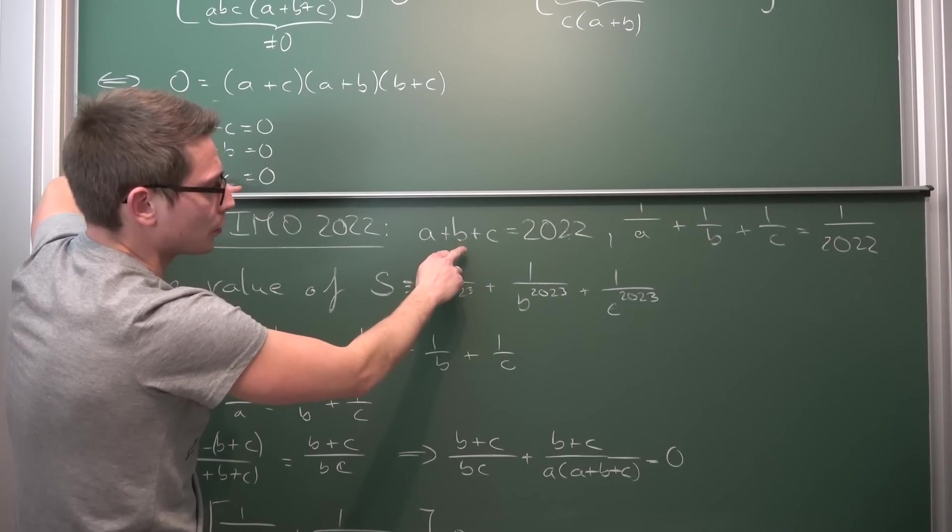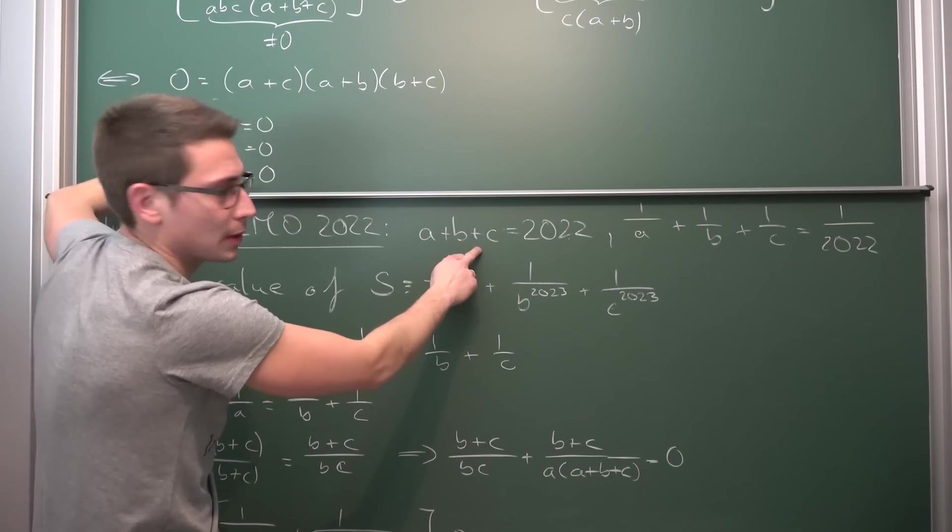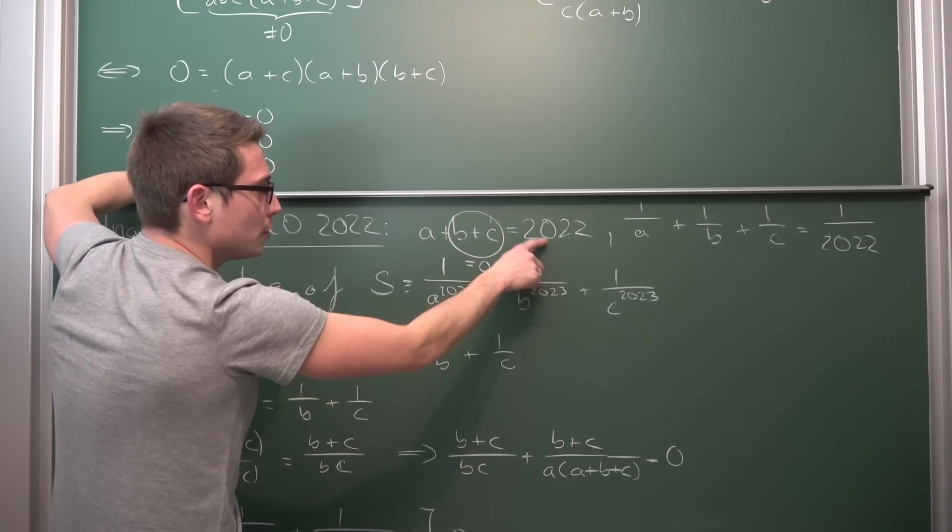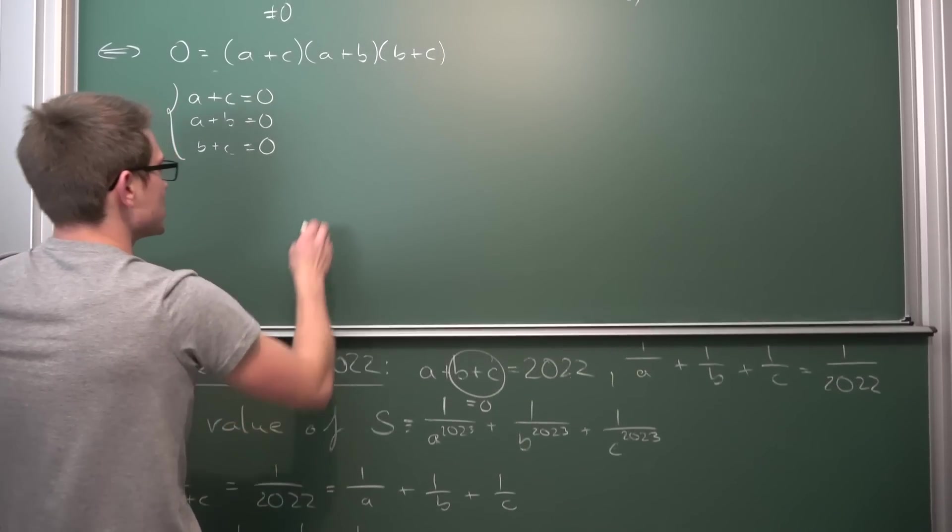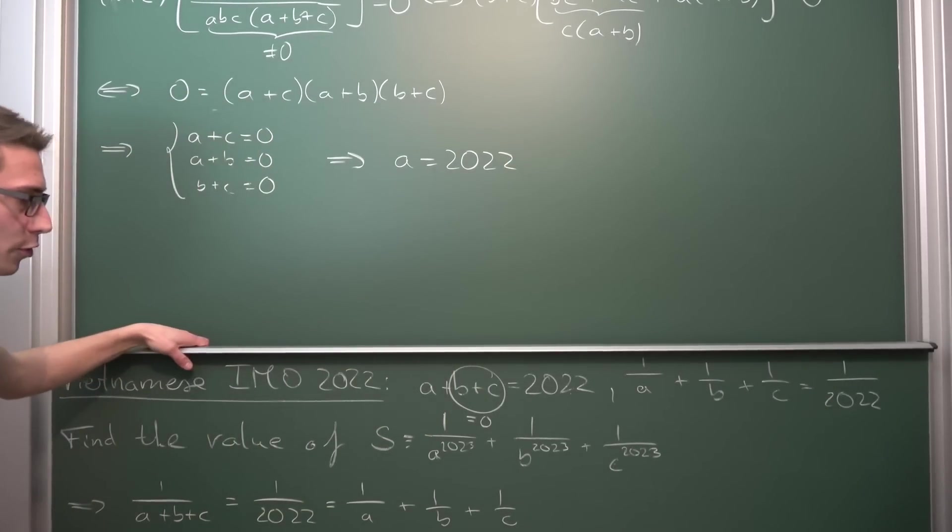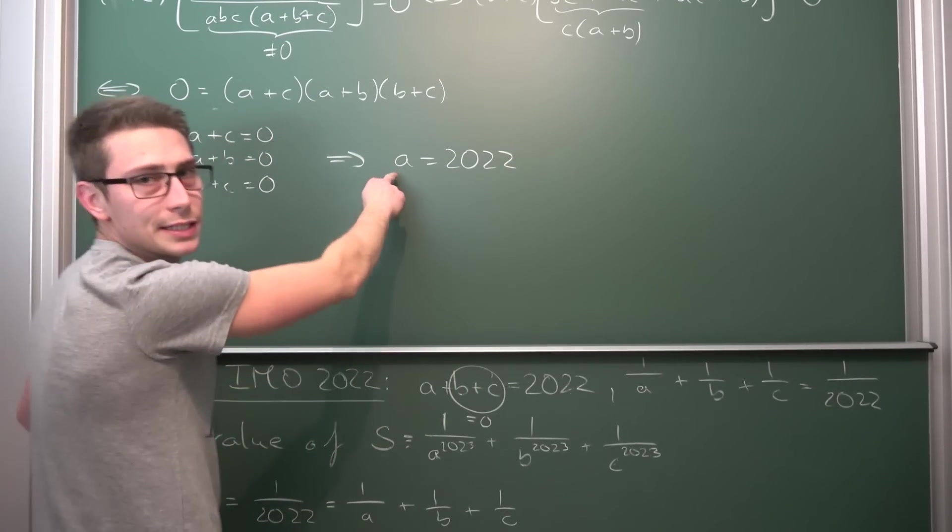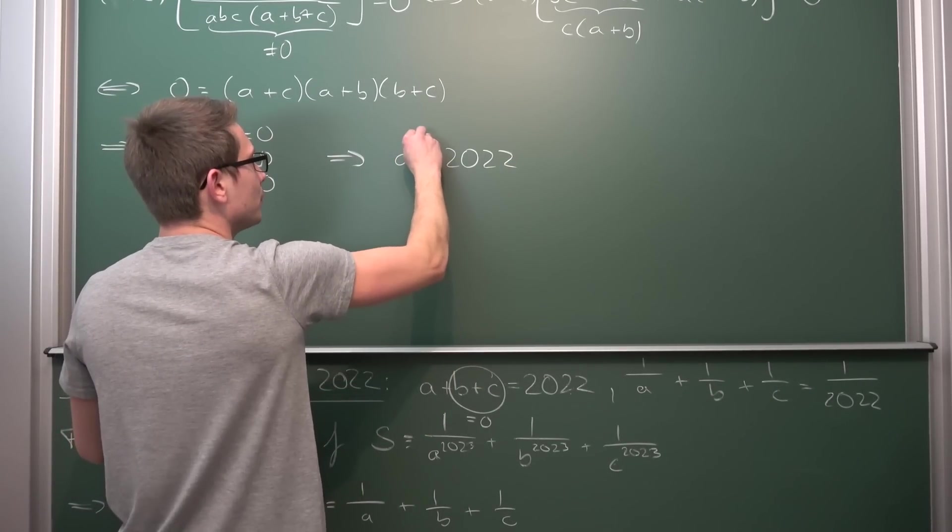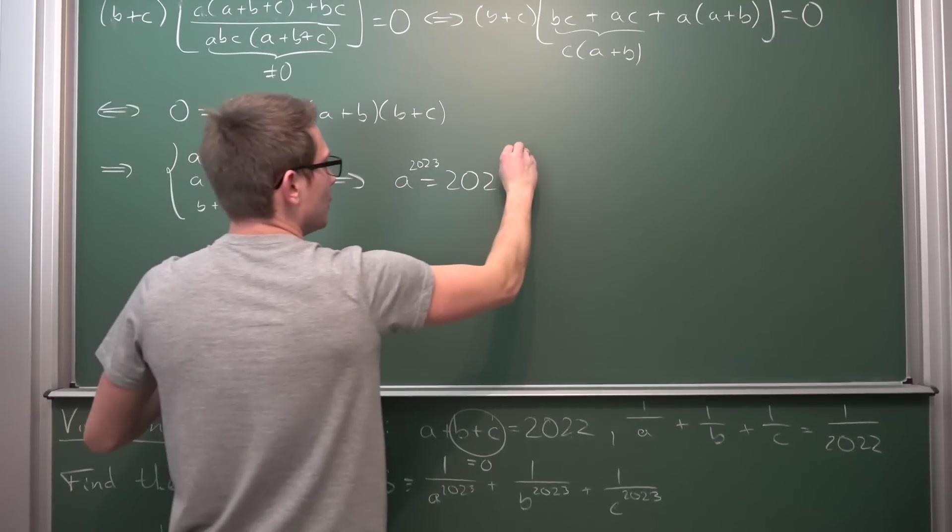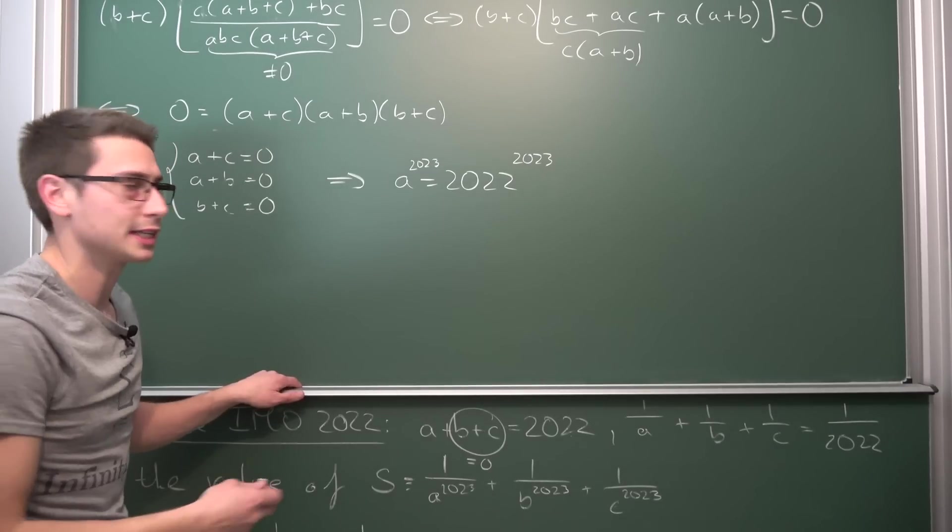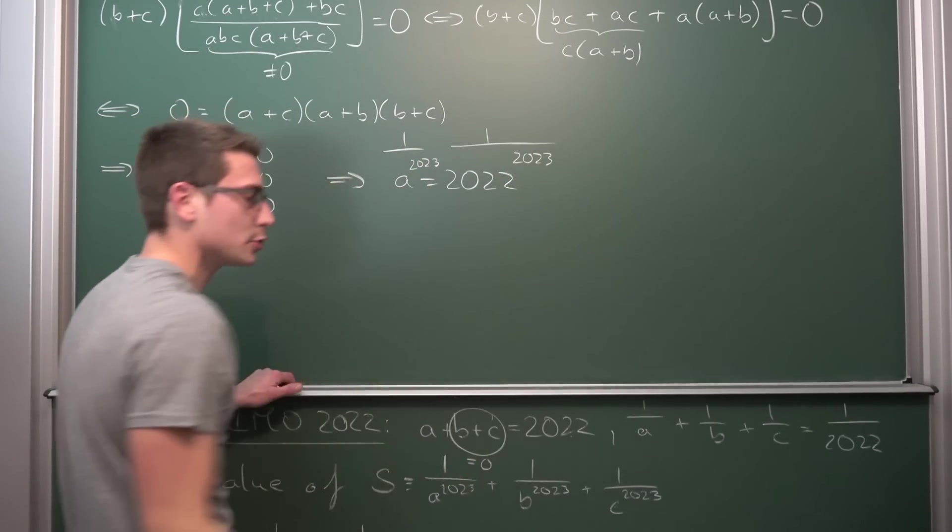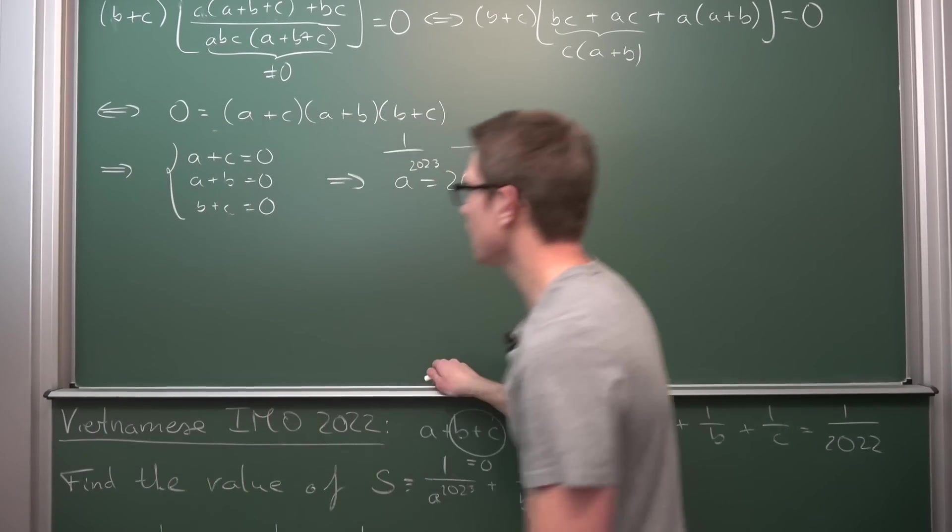If we plug this into here, what we are going to get is A plus B plus C, but this right here is going to be equal to zero, is equal to 2022 meaning A is equal to 2022. That's the implication that we are going to get from our assumption. Now we can go a step further here. We can now raise it to the 2023 power. Because this is what is asked of us. And we can also take the reciprocal meaning 1 over A to the 2023 is equal to 1 over 2022 to the 2023.